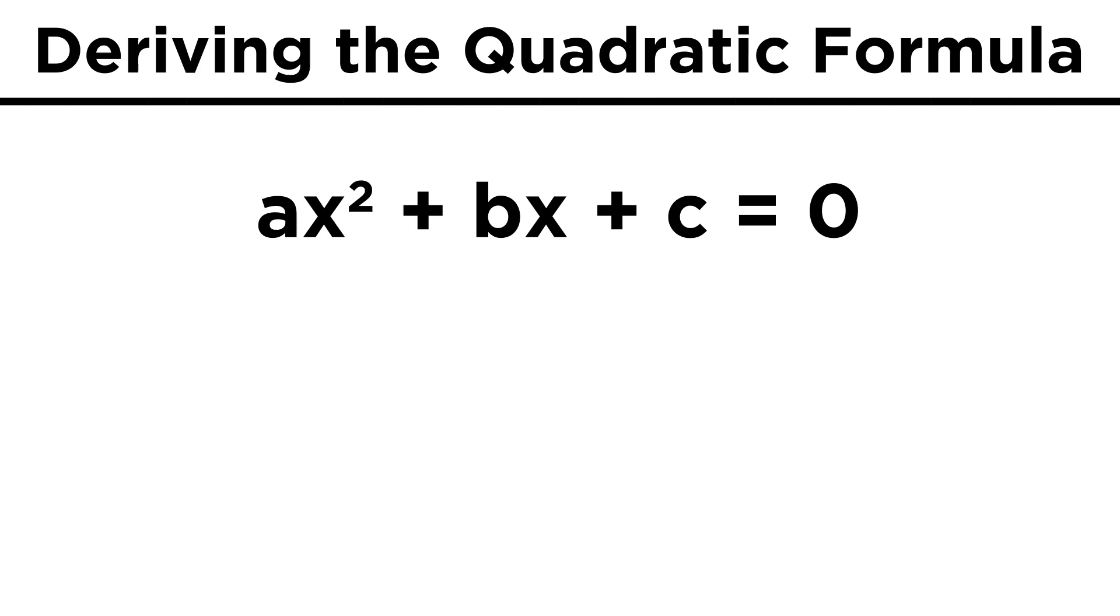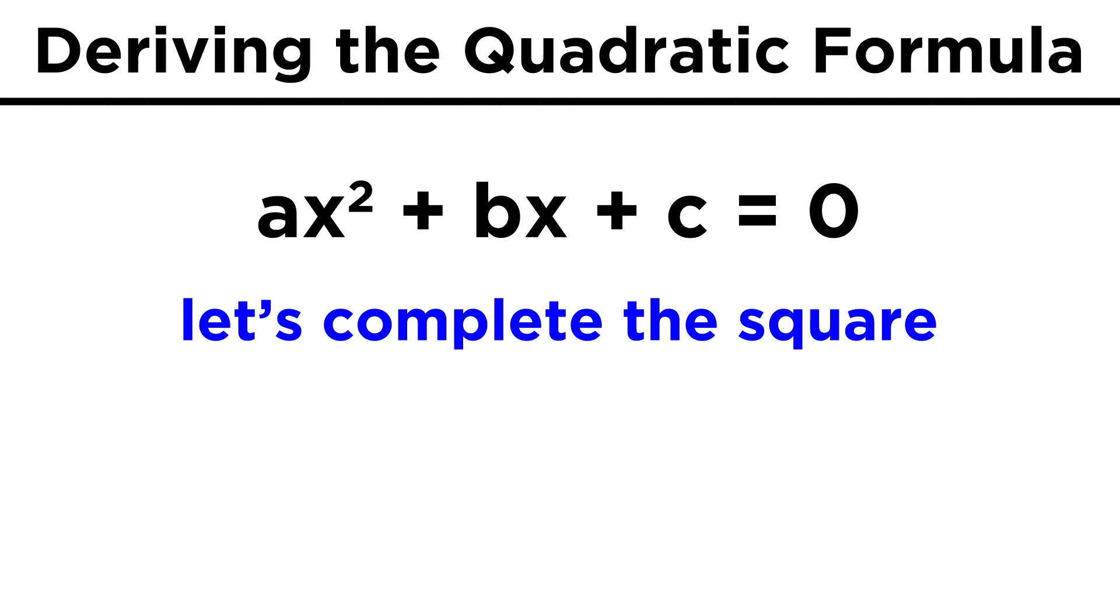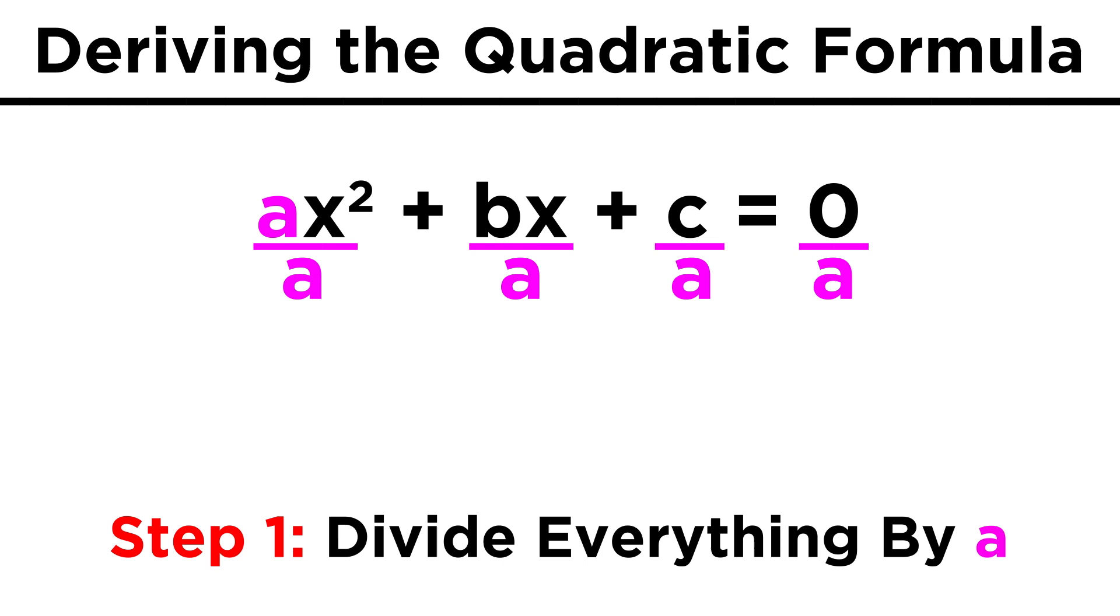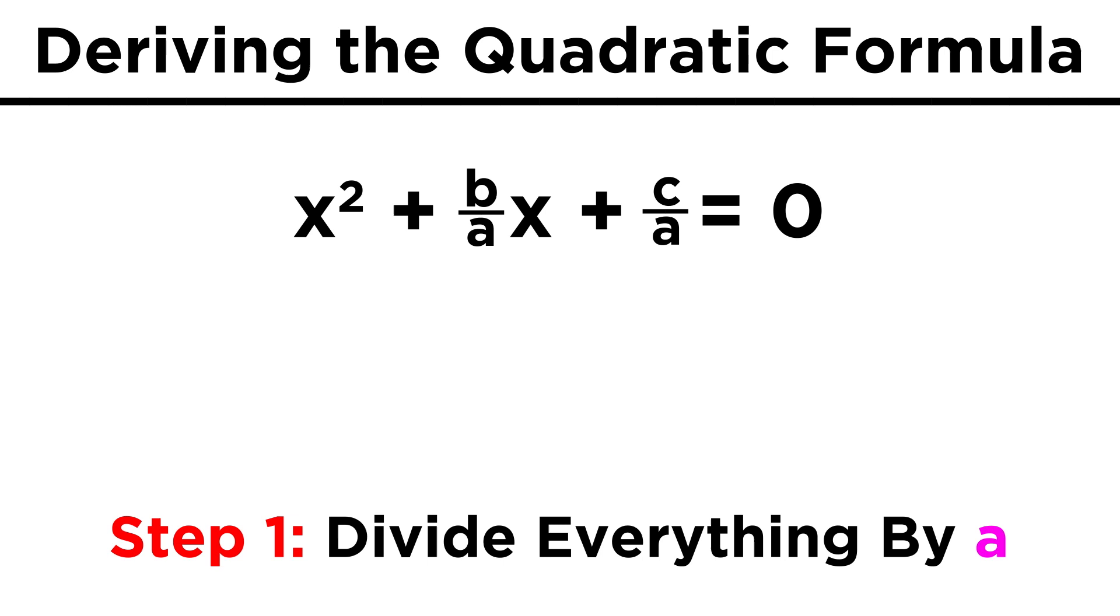Let's start with a general polynomial equation, ax squared plus bx plus c equals zero, where a is not equal to zero. Let's try to complete the square, just as we learned before, but with this general form instead of a specific example. Remember, the first thing we would do is divide everything by a, because it's easier if there is no coefficient operating on the x squared term. That means we get x squared plus b over a times x plus c over a equals zero.